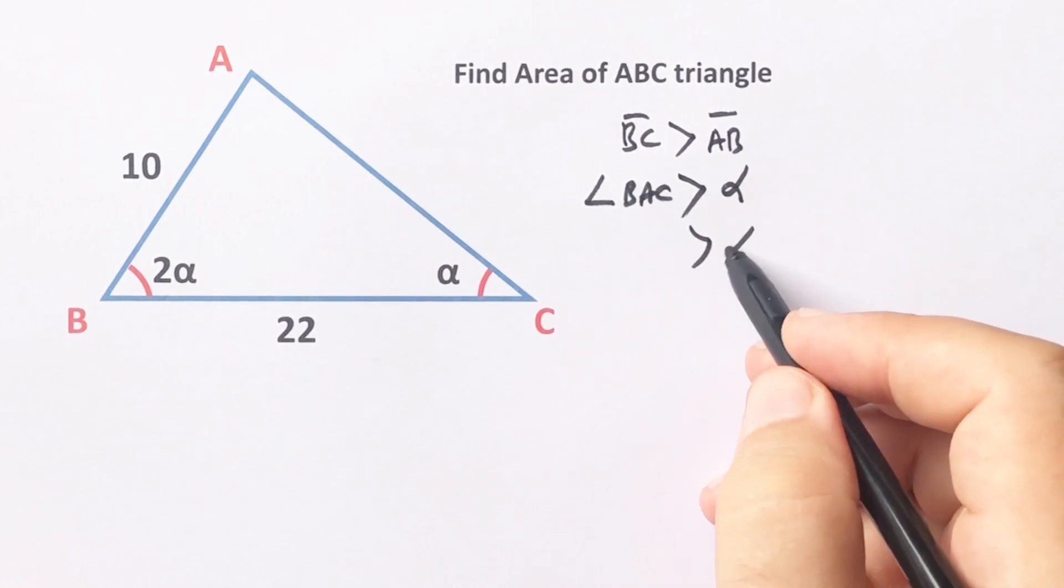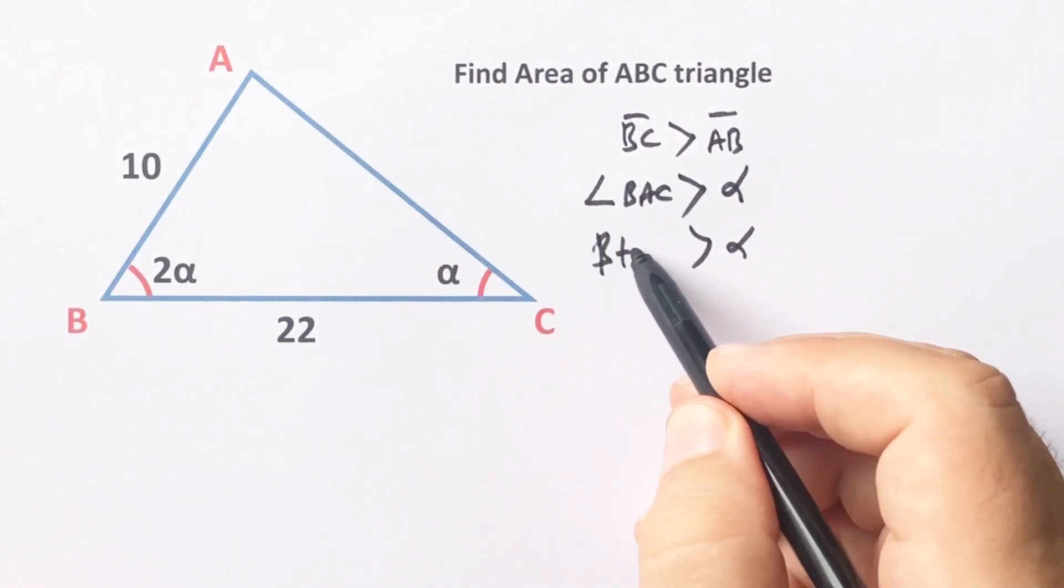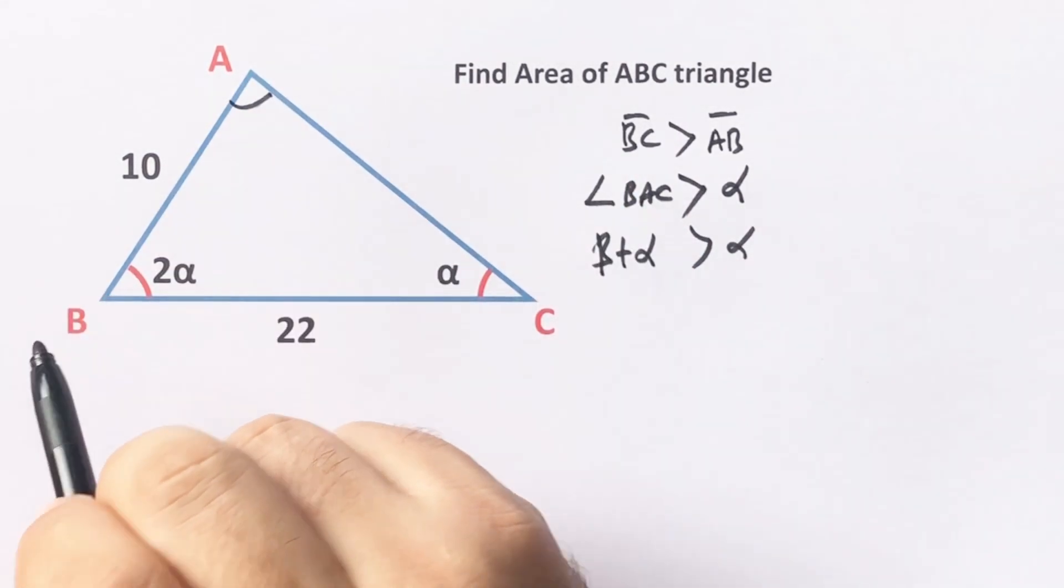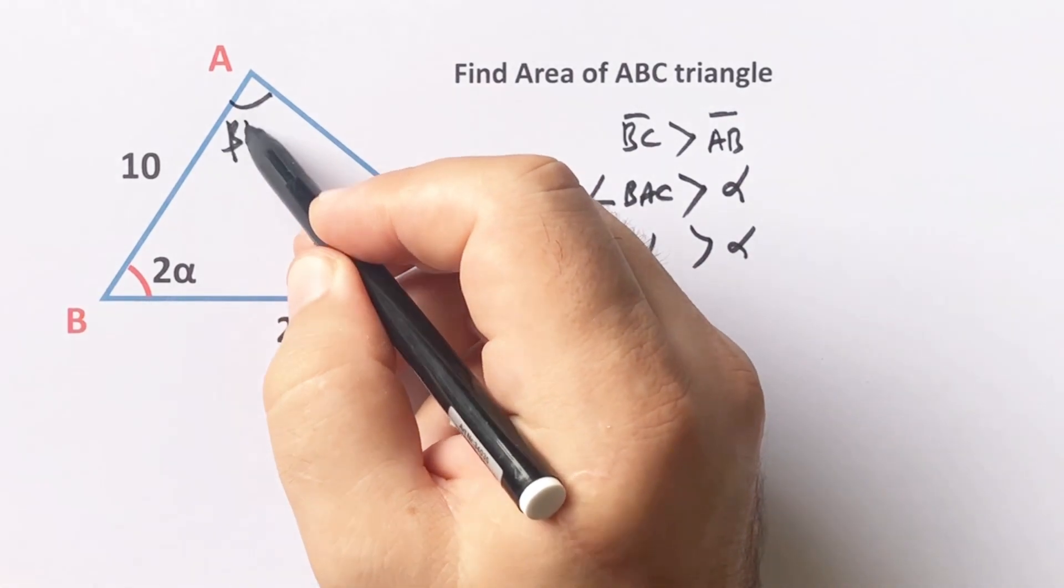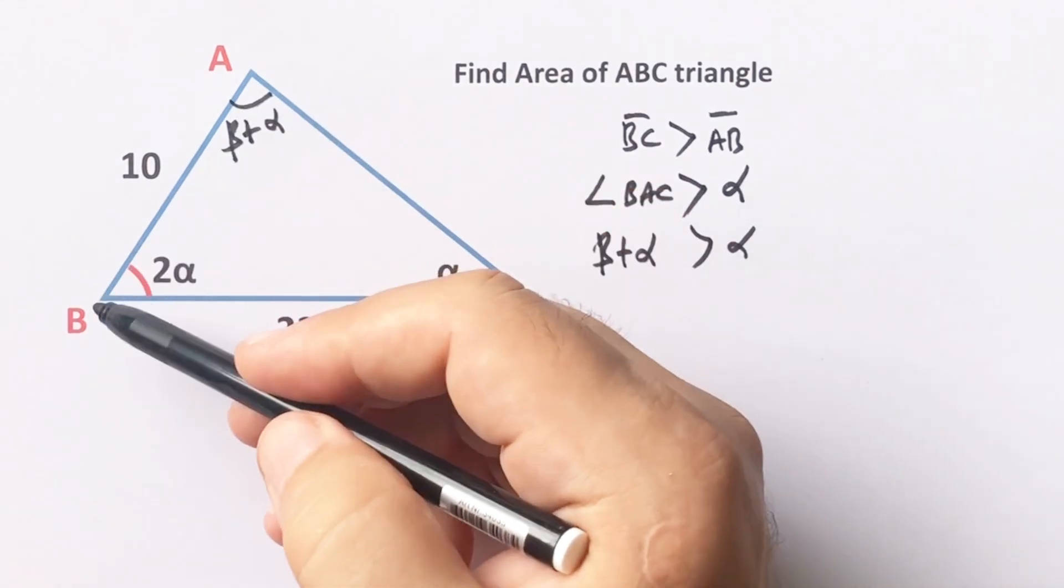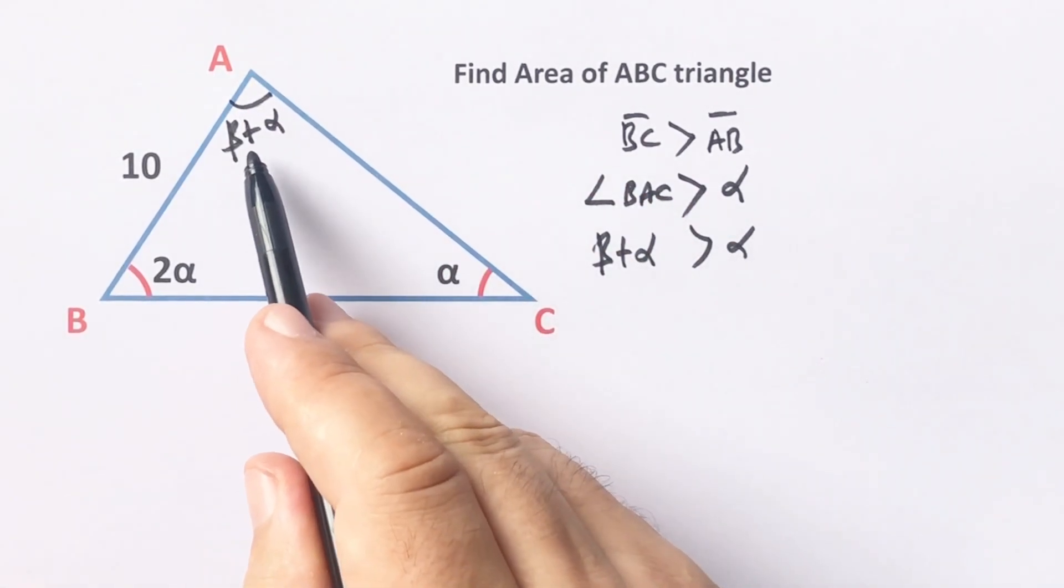So the angle BAC must be greater than alpha. Therefore, let's call here beta plus alpha, because this angle must be greater than alpha, right?